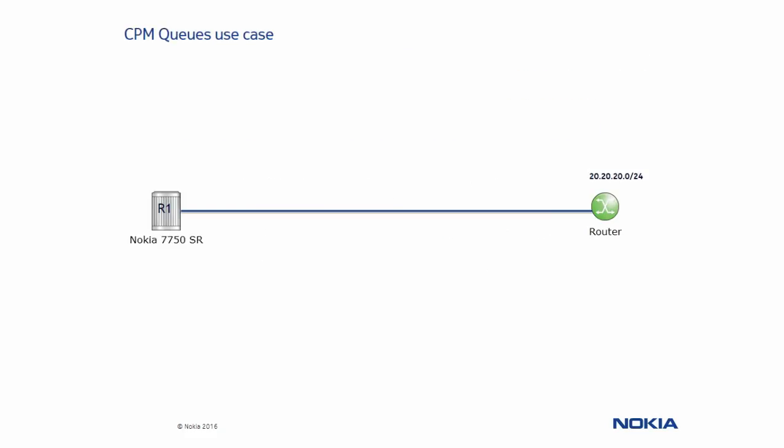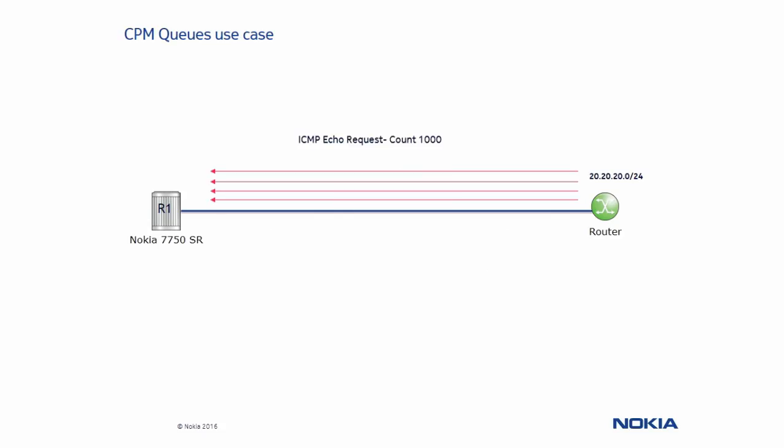Let's look at our first use case, where ICMP traffic from a router is starting a denial-of-service attack. It will send 1000 packets as fast as it can and each packet will be 1000 bytes. Router R1 will be configured to rate limit the traffic with a rate of 100 kilobits per second and an MBS and CBS memory of 100 kilobytes for ICMP traffic. We will see how the traffic is rate limited to prevent over-utilization of the CPU.